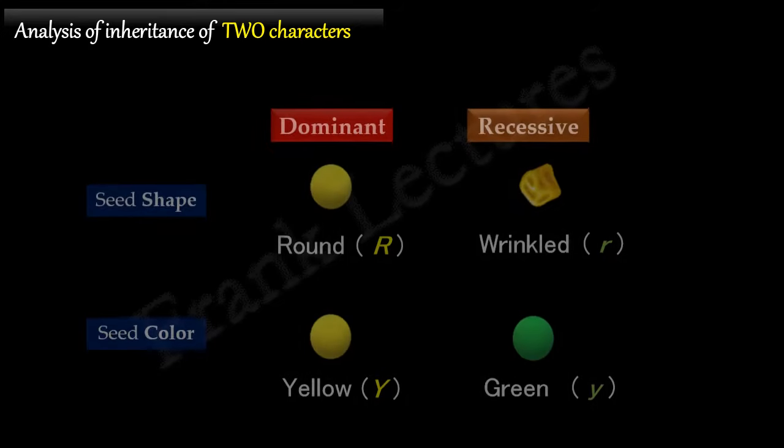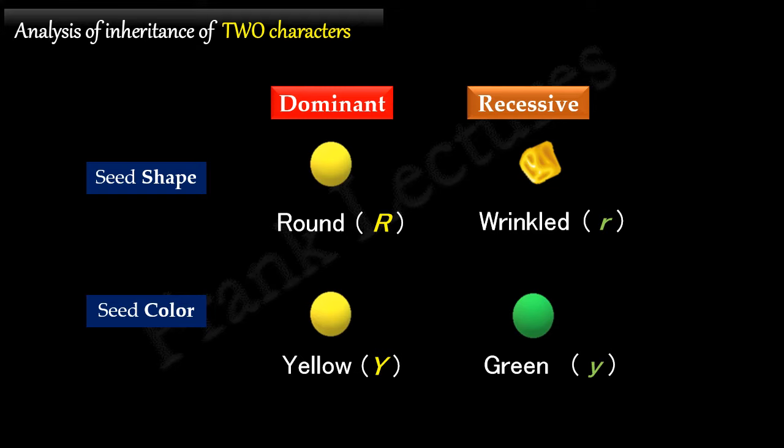In the last video lecture, we had an overview of the experiment done by Mendel for the analysis of inheritance of two characters. The two characters were seed shape and seed color. Today, we will understand in detail Mendel's law of independent assortment. Let's begin.